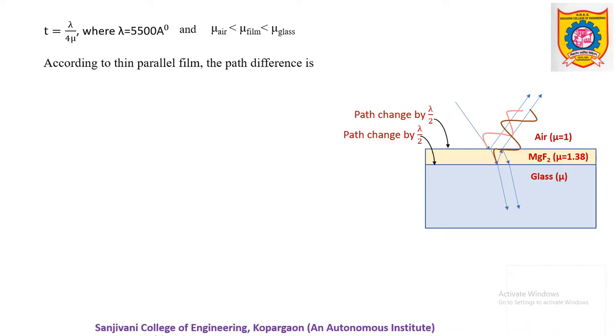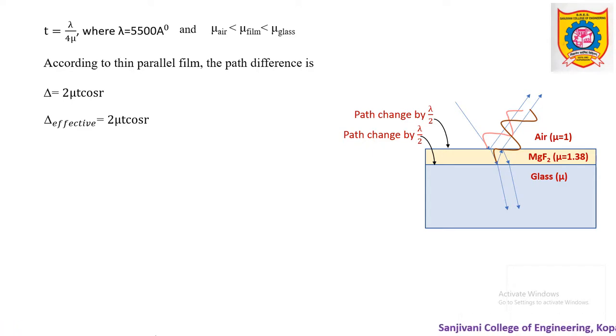Let us apply our known theory of parallel film, thin parallel film. Already in previous videos, we have seen that for thin parallel sided film, the path difference is 2 mu t cos r. Now further according to Stokes law, at both the interfaces as path is changing equivalently, therefore if we consider the effective path difference, it will remain the same. There is no plus minus lambda by 2 as it cancels.